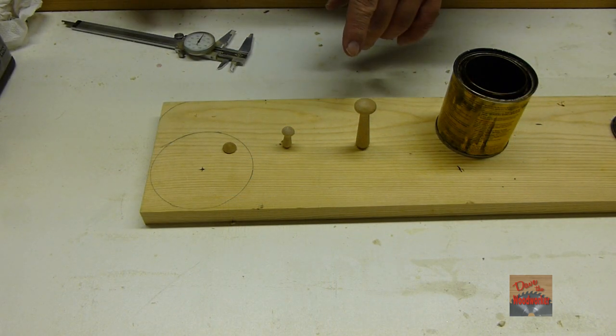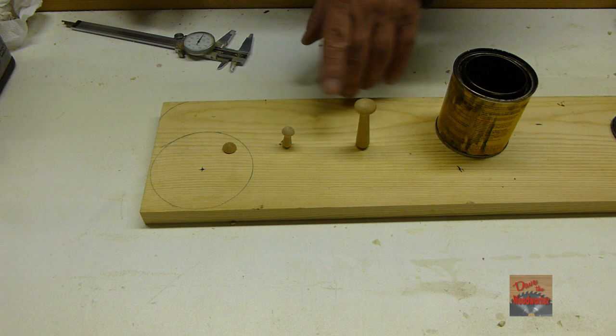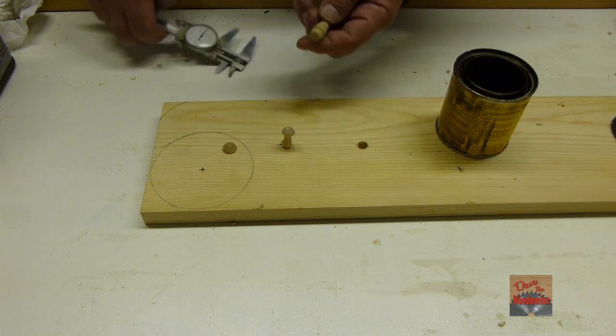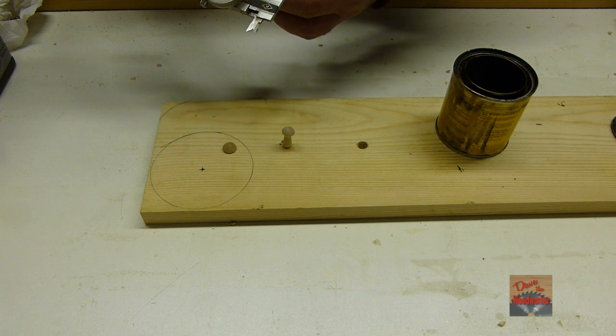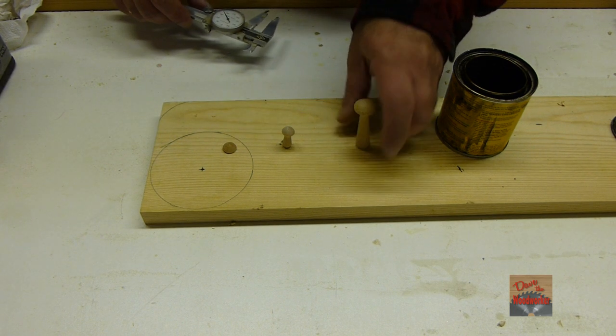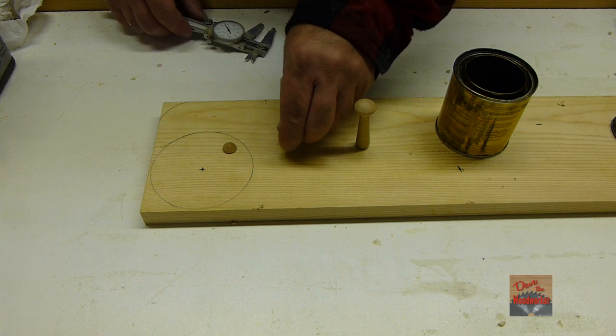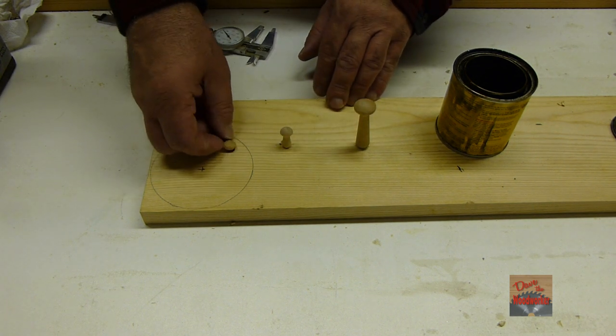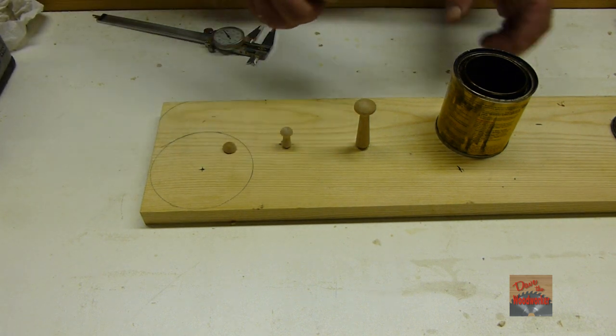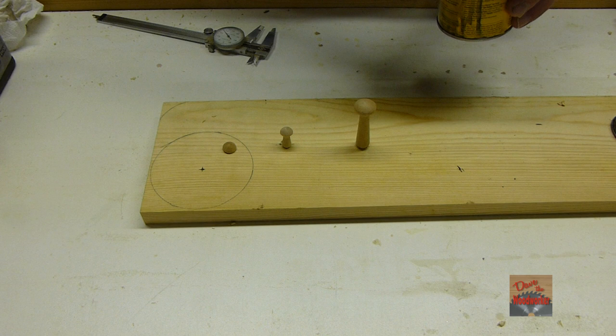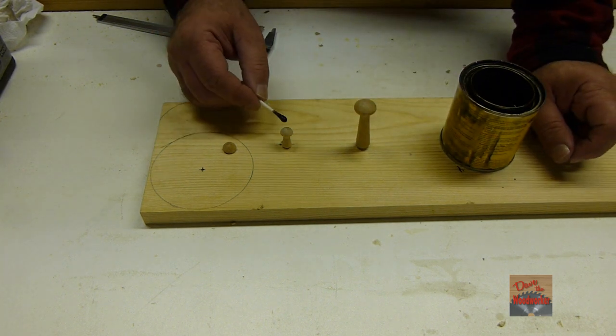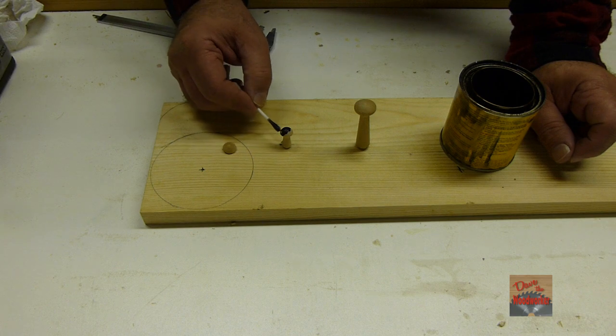When staining small parts like these shaker pegs or this wooden button, measure the ends and drill a hole according to the size. Make a little shallow hole for it. Then get a Q-tip, put your stain on the Q-tip, and you can stain your parts.